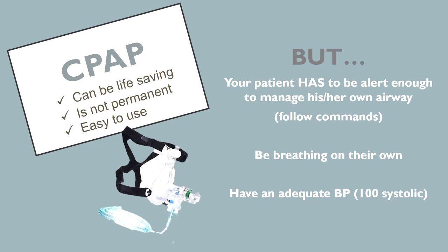Typically we look for the same blood pressure threshold as we would if we were giving nitroglycerin — 100 systolic is what most systems use. So I'm going to check a blood pressure, make sure my patient is breathing and following commands.